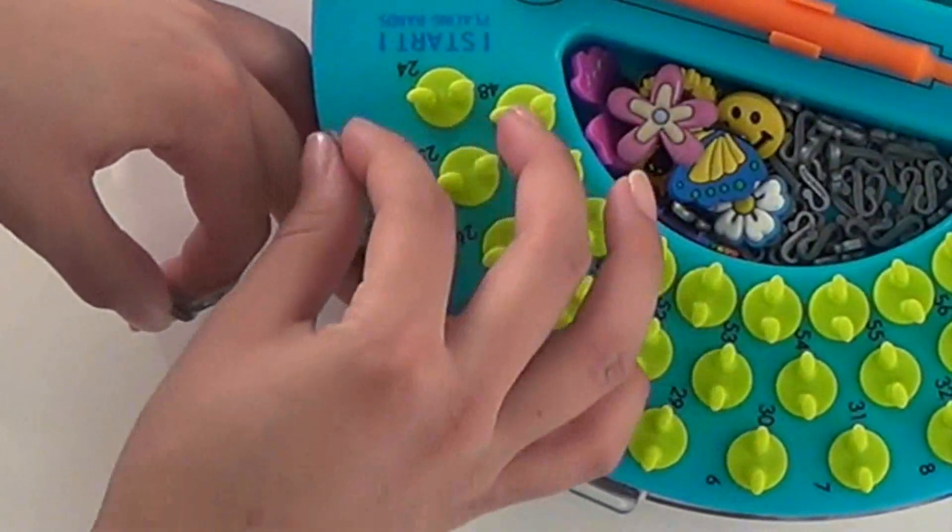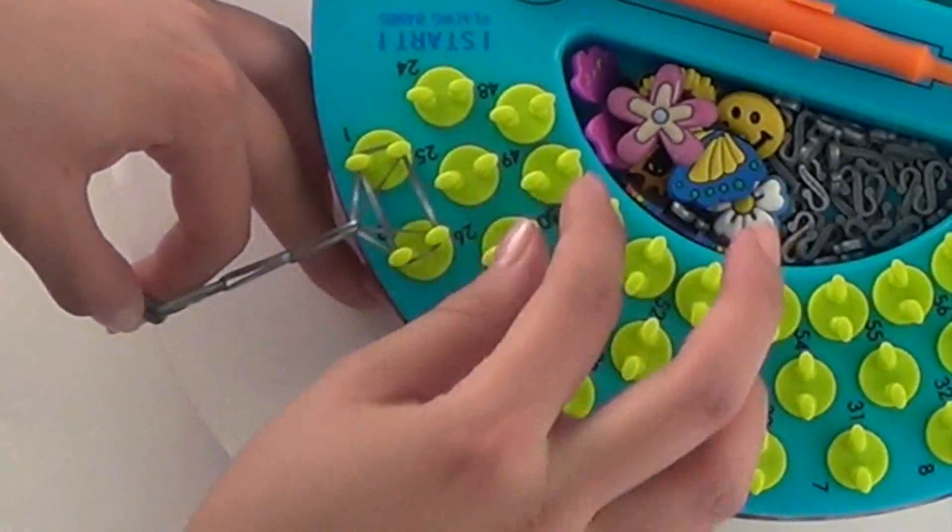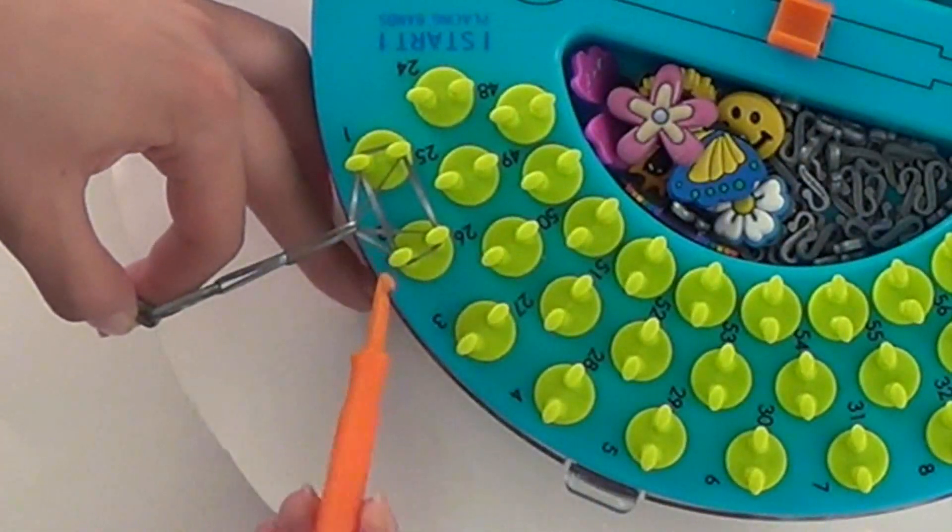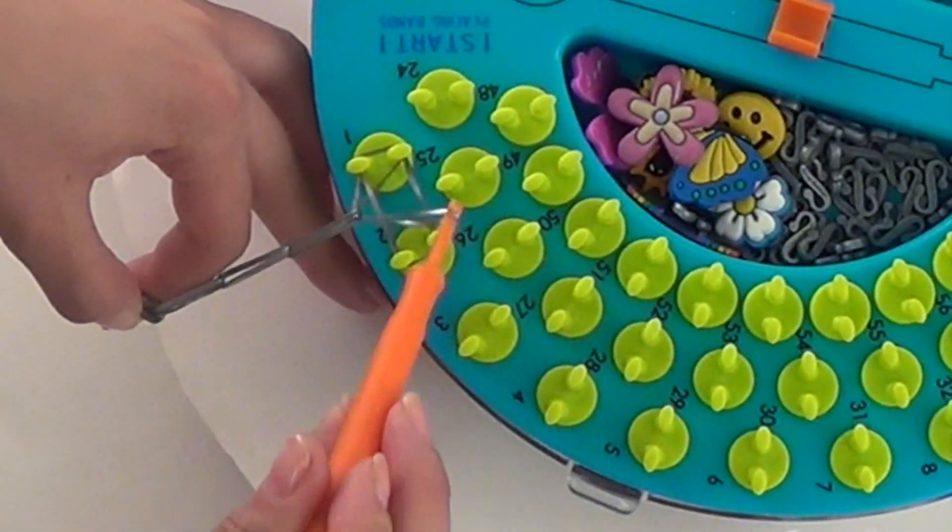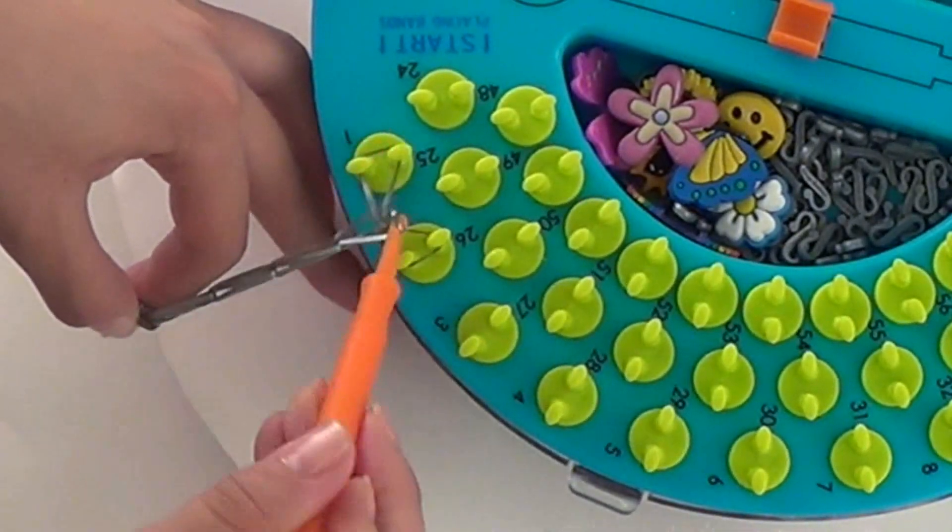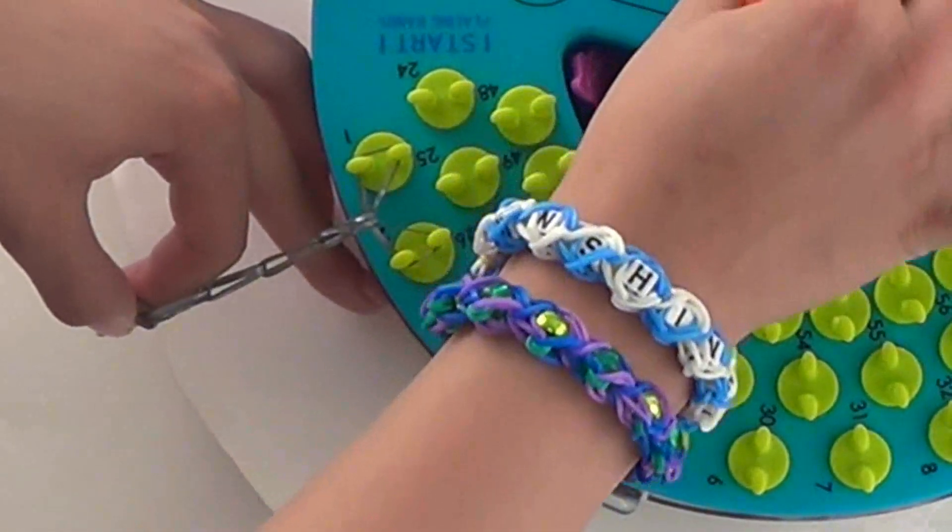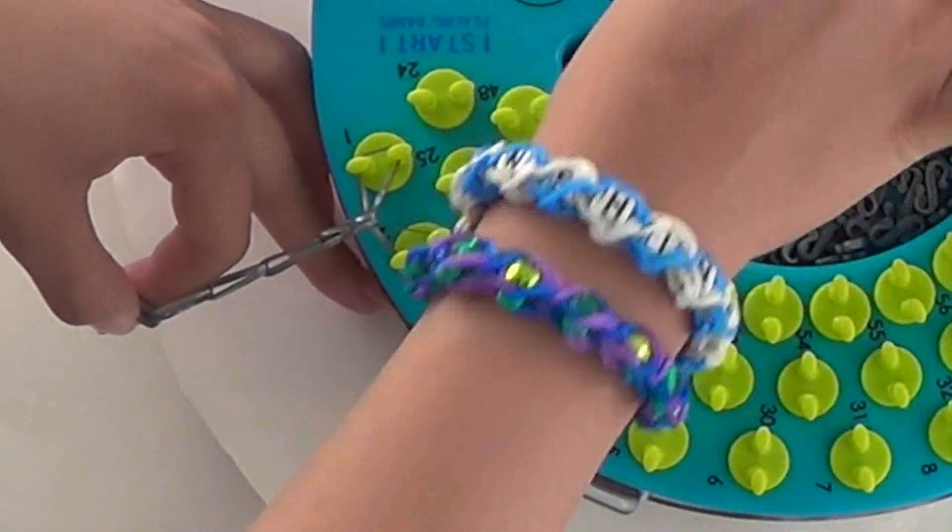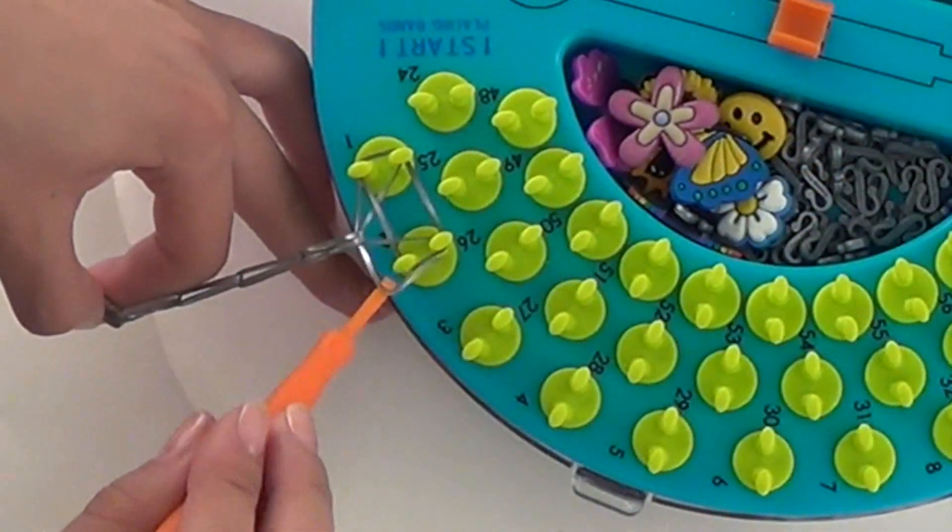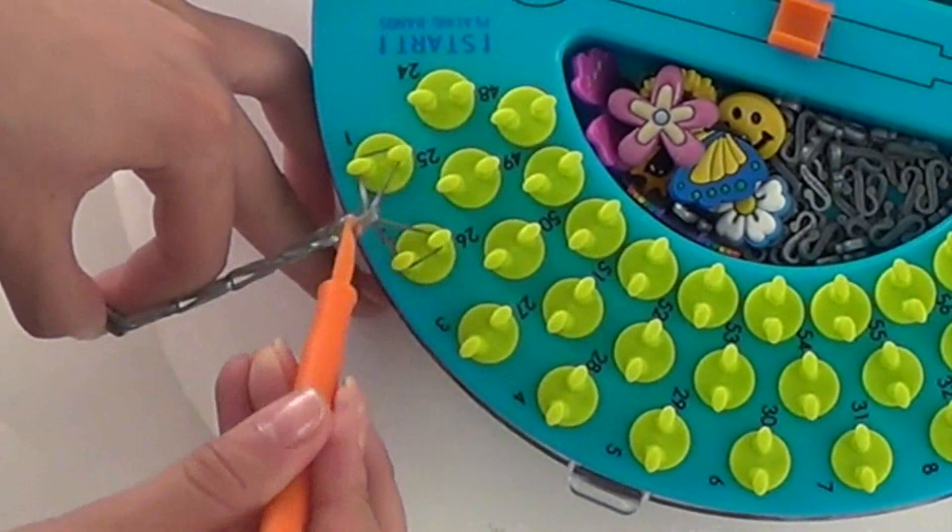So you can either use your fingers or your FB hook and grab the outer side and flip it over. I'll show you that one more time. Attach your rubber band and use your FB hook to flip over.